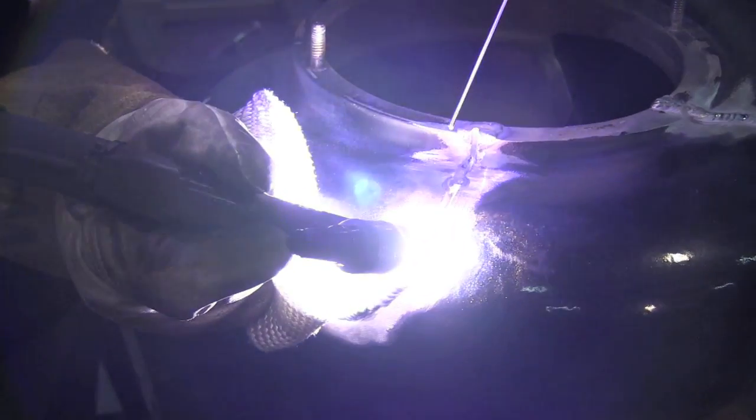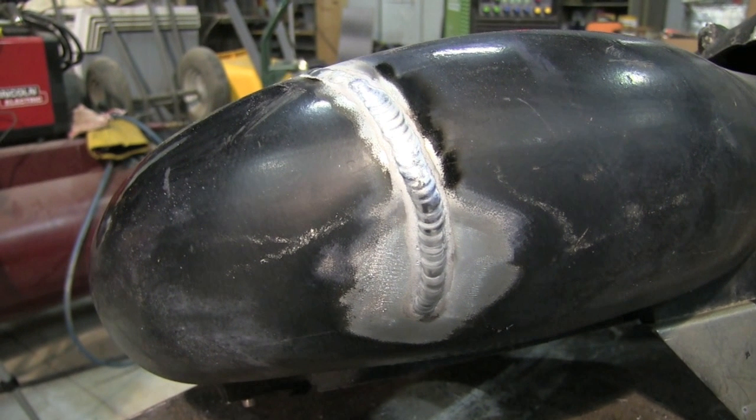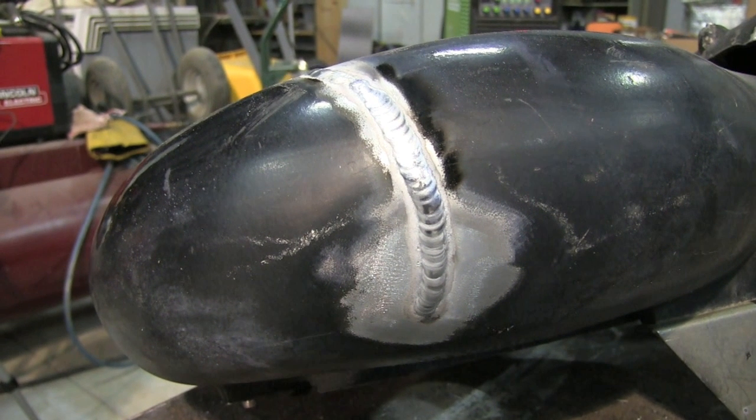One thing I did notice on this job, and this was just strictly I noticed it on AC, was it's very important to have a really good ground. I think this machine starts in electrode positive, and so if you intermittently lose your ground you get a little tungsten flare up. So once I got a really good ground that problem seemed to go away.